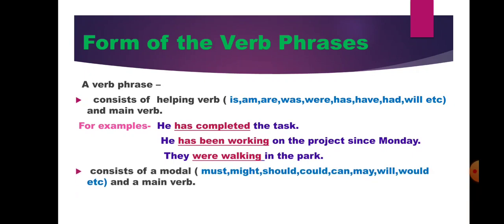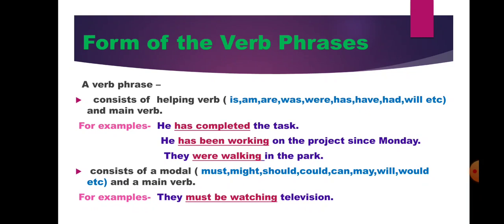A verb phrase can also consist of a modal — such as must, might, should, could, can, may, will, would, etc. — with a main verb. In any sentence, if you get a modal with a main verb, that group of words is a verb phrase. Example: 'They must be watching television' — must is a modal and watching is a main verb, so 'must be watching' is a verb phrase. 'We should obey our elders' — should is a modal and obey is a main verb, so this is a verb phrase.